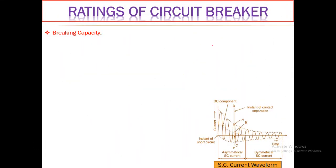Here I have shown a waveform representing the short circuit current. The waveform has an asymmetrical shape. The fault current comprises two components: one is the AC component, which is sinusoidal, and the second is the DC component, which arises due to the inductance of the line. The DC component decays to zero, after which the waveform achieves a symmetrical shape.